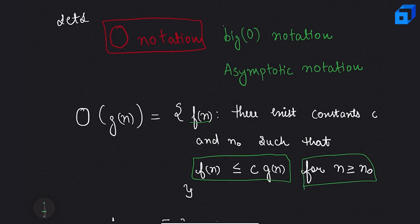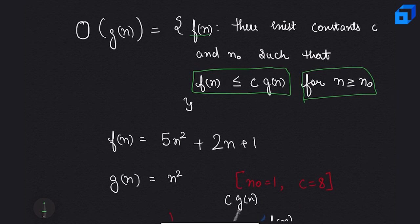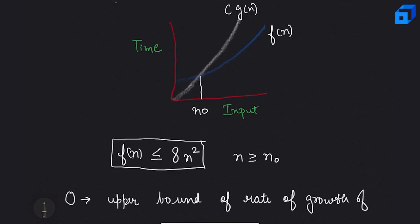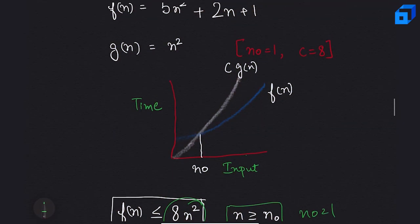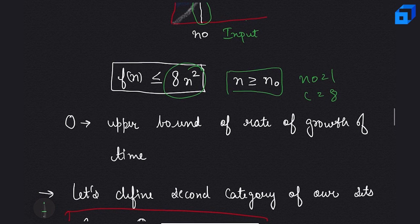For example, let f(n) = 5n² + 2n + 1 and g(n) = n². If we set n₀ = 1 and c = 8, then f(n) ≤ 8n² for all n ≥ 1. Looking at the graph, after n₀, c·g(n) is always greater than f(n). So Big-O represents the upper bound of the rate of growth of time.